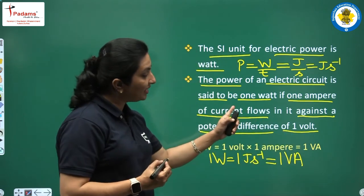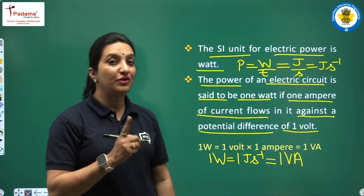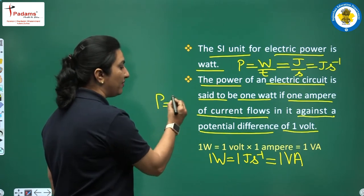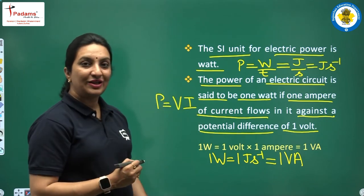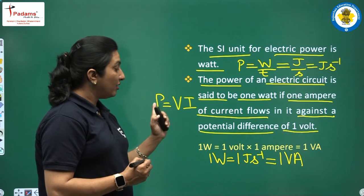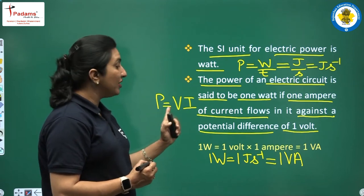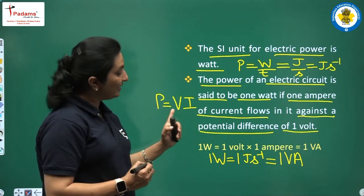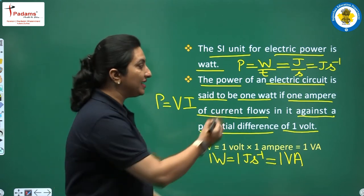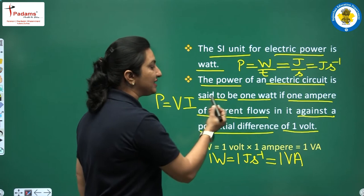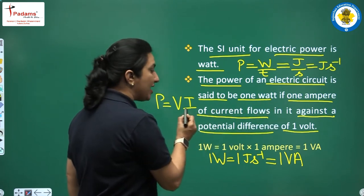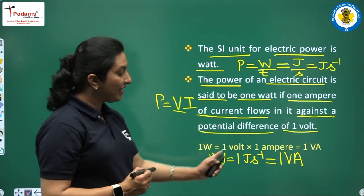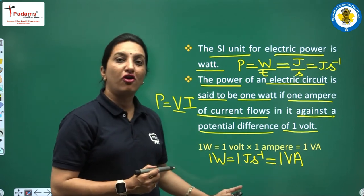This definition comes from the formula P = VI. For 1 watt of power, we must have 1 ampere of current producing a potential difference of 1 volt — that is why we get 1 volt-ampere. The power of an electrical circuit is said to be 1 watt if 1 ampere of current flows in it against a potential difference of 1 volt.